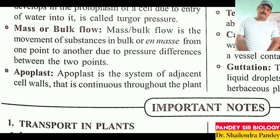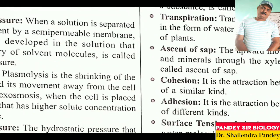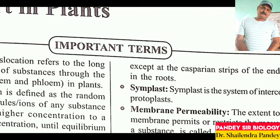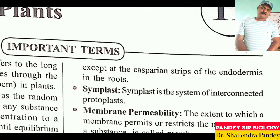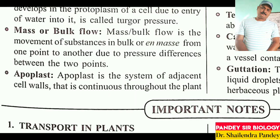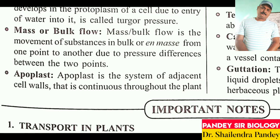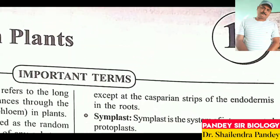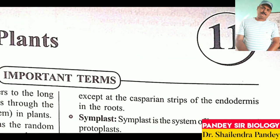Apoplast: the apoplast is the system of adjacent cell walls that is continuous throughout the plant — water passes continuously through the gaps adjacent to cell walls. This is called the apoplast, except for the casparian strips of the endodermis in roots.